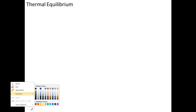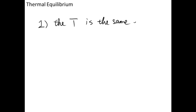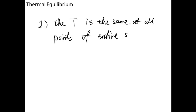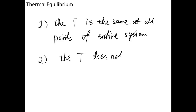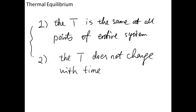Let's do some summaries. The first is thermal equilibrium. The system is said to reach thermal equilibrium when the following points are satisfied: first, the temperature is the same at all points of the entire system; and second, the temperature does not change with time. If both points are satisfied, we say the system reaches thermal equilibrium.